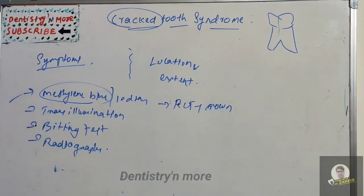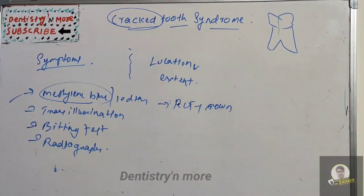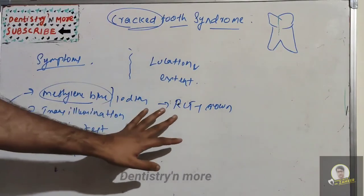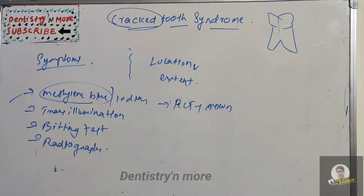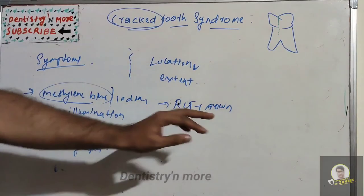The safest treatment option is root canal treatment combined with a crown. If the extent and location of the crack are difficult to identify, or if the pulp is involved, we always proceed with root canal treatment, and place a crown to be on the safer side. Aesthetic considerations also matter: for anterior teeth, an aesthetic non-metallic crown is used, while for posterior teeth a metallic crown is acceptable.